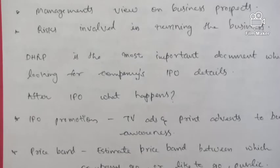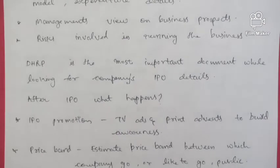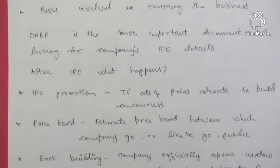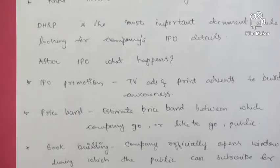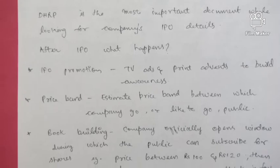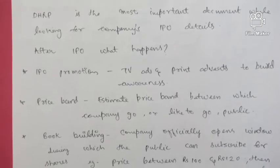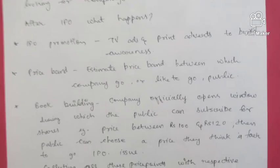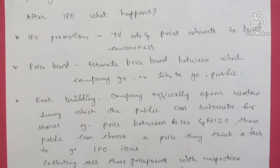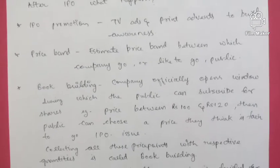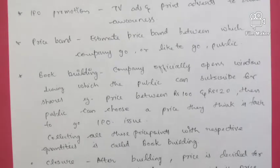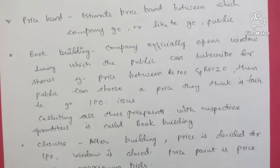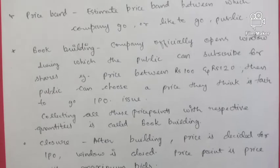After the DRHP, IPO promotion is done through TV ads and print ads to build public awareness. Then the price band — the estimated price range within which the company plans to go public — is determined. Book building follows, where the company opens a window during which the public can subscribe for shares. For example, if a price band between 100 and 120 is set, the public can choose a price they think is fair. After book building, a final price is decided — the price point with the maximum number of bids — and the window is closed.